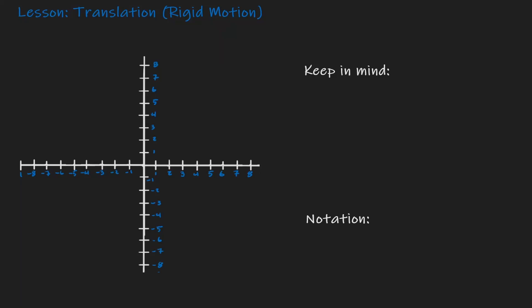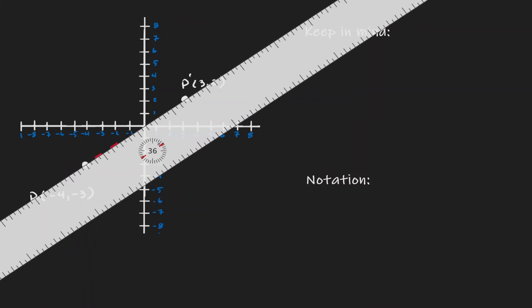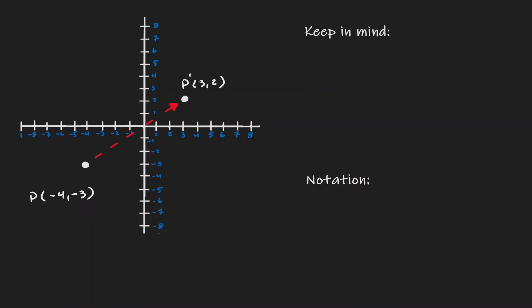Welcome. Today we're going to talk about the rigid motion of translation. So let's just choose a random point in our coordinate plane. And let's say that we want to move this point at the coordinate. One way to do so is to move it in a diagonal line. And this is exactly what a translation is — a rigid motion of translation is just the movement from one location to another.